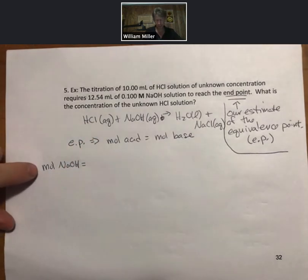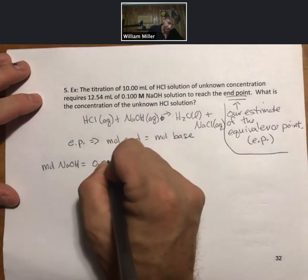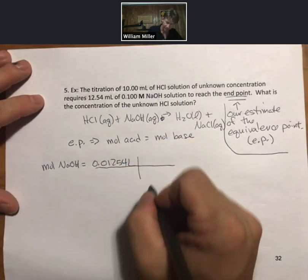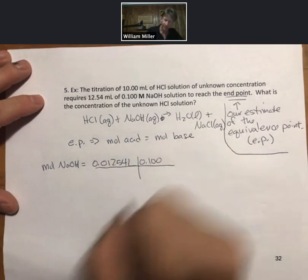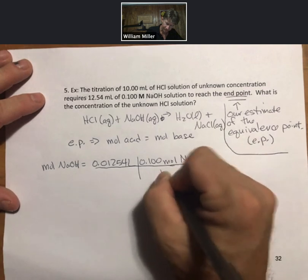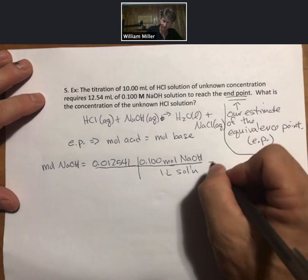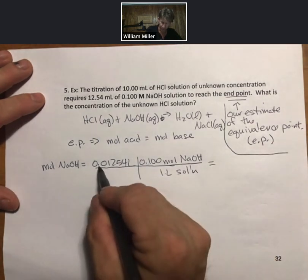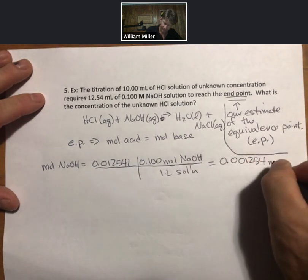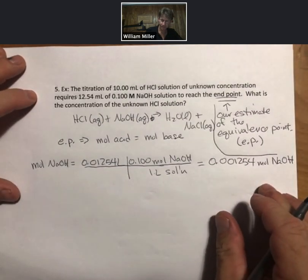The first thing we'll do is find our moles of sodium hydroxide. Convert milliliters into liters: 0.01254 liters. Use molarity as a unit conversion factor to convert liters of solution into moles of sodium hydroxide. With the 0.100, we're going to add another zero over here.